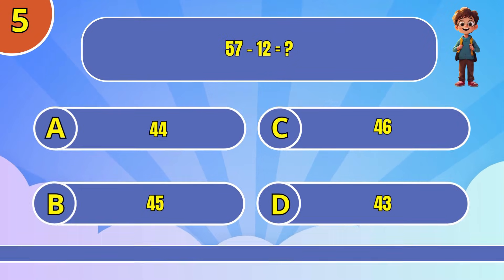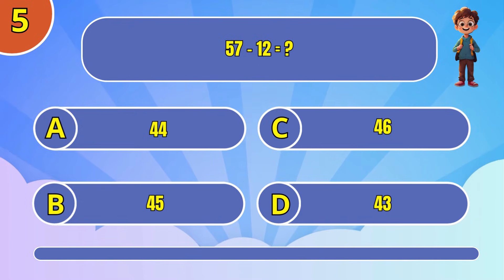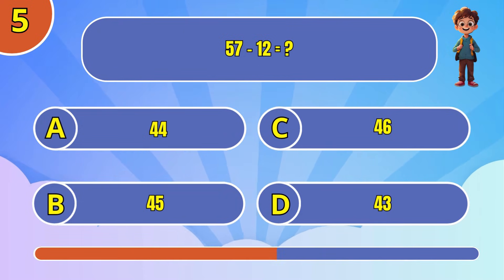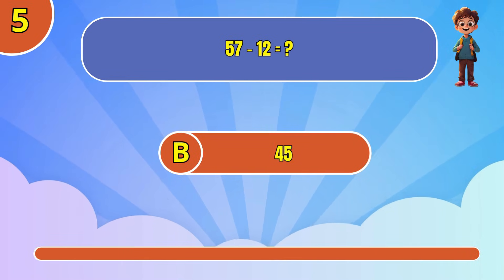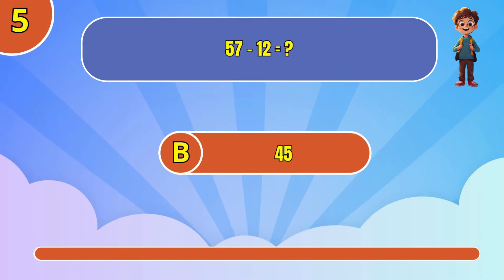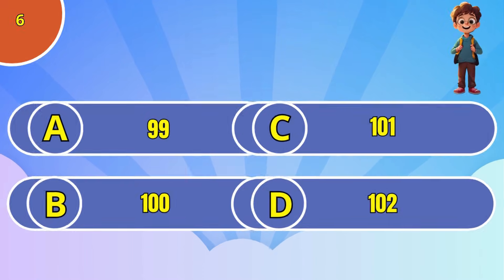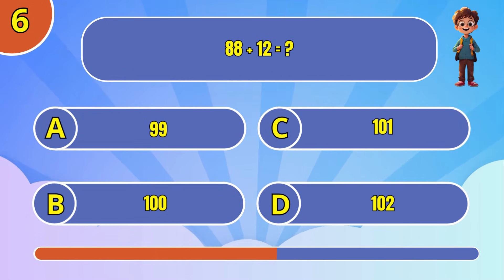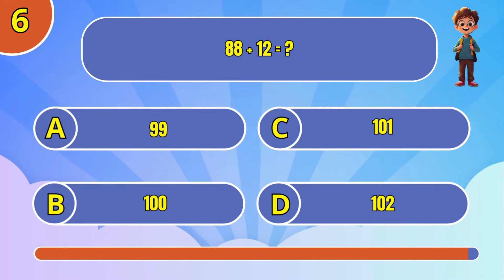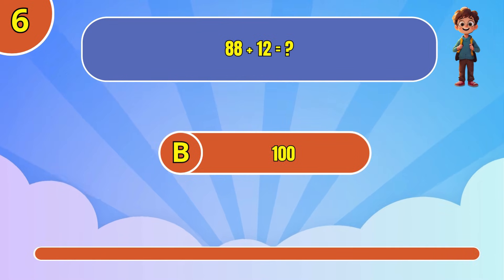What is 57 minus 12? The answer is 45. What is 88 plus 12? The answer is 100.